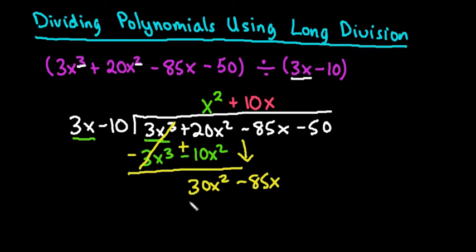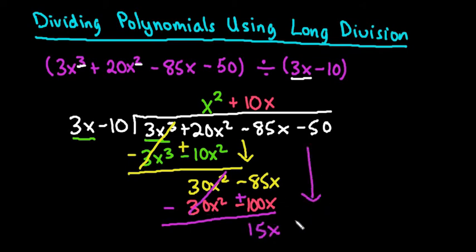So 10x times 3x gives me 30x squared. So I'm just multiplying this number up here by this number here. And then I'm going to do the same thing. I'm going to take the 10x and I'm going to distribute to the negative 10. So when I do that, I get negative 100x. And then remember, our next step is always to subtract. So when I subtract, I change all of my signs. This cancels out and I'm left with 15x. And I bring down the negative 50.